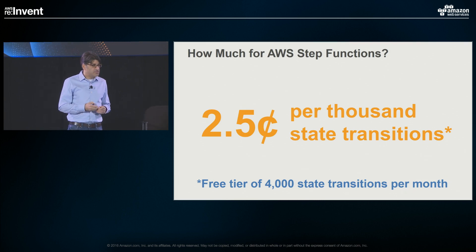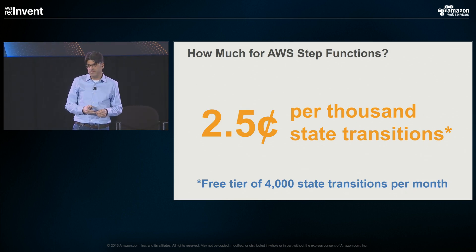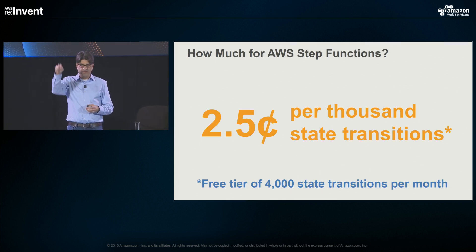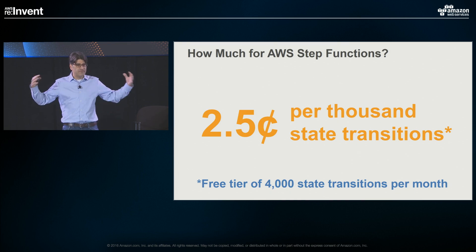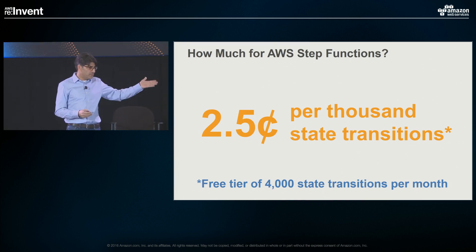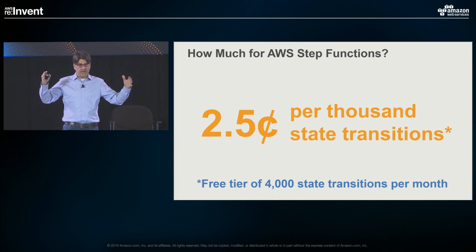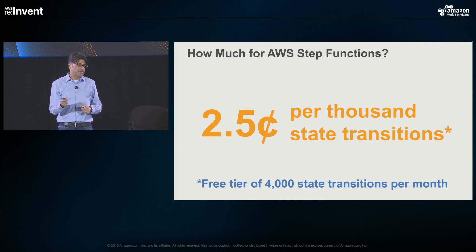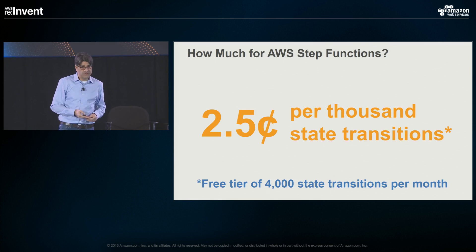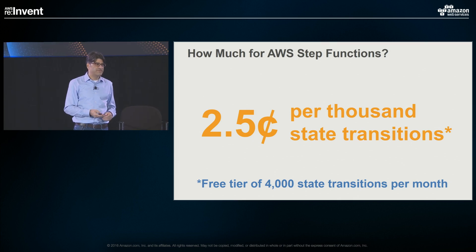How much does it cost? It's 2.5 cents per thousand state transitions. We measure state transitions by looking at the arcs on the graph — trace your path from start through until you get to the end, count those up, and that's the number of state transitions your execution completed. It's the path your execution follows, not the number of paths you create in your state machine. A state machine may have 20 or 25 different states, but the path through to complete an execution might be five or six. We also have a free tier: 4,000 state transitions per month are free, so you can experiment freely without any bill for the service.